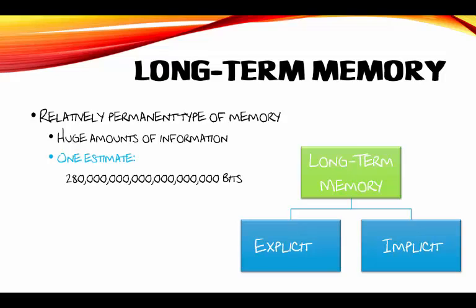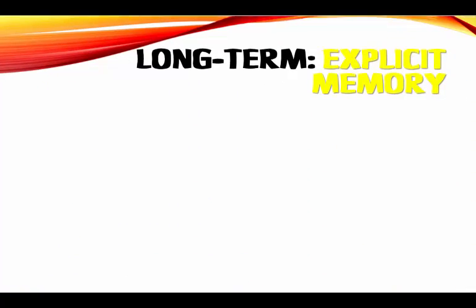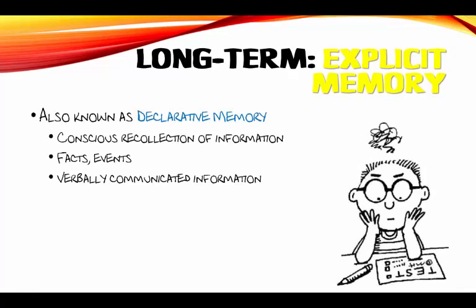Now there are a lot of different types of memories that you can pull out of this brain of yours. I'm going to put them into two categories. The first is called explicit memories, which your text also calls declarative memories. These are memories, information, sensations — all of this is the information you deliberately retrieve from your long-term memory stores.